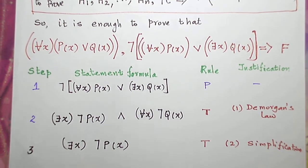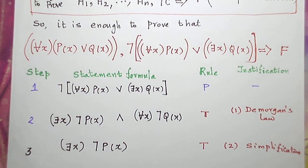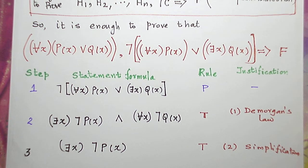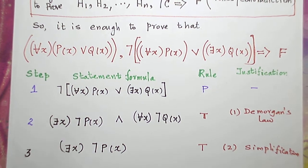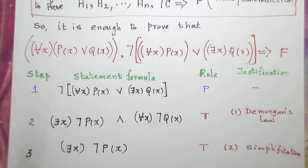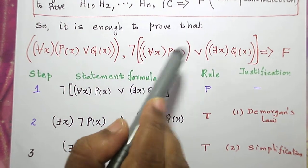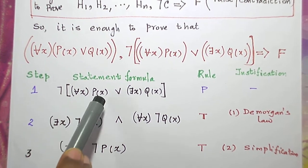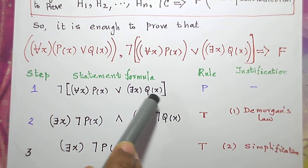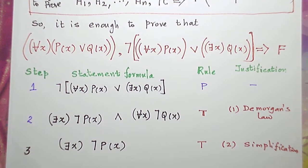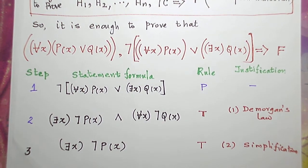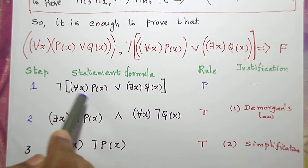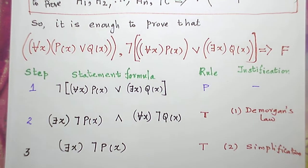Let me split the solution into four columns: step, statement formula, rule, and justification. In the first step, let me introduce one of the premises — the negation of: for all x p(x) or there exists x q(x).